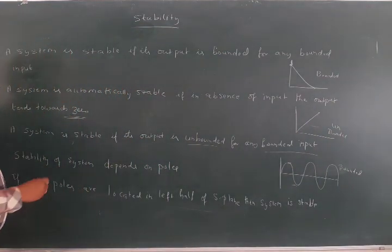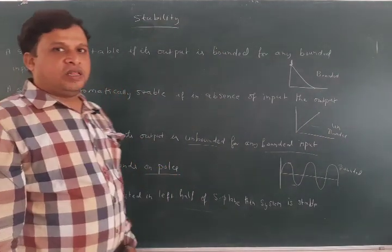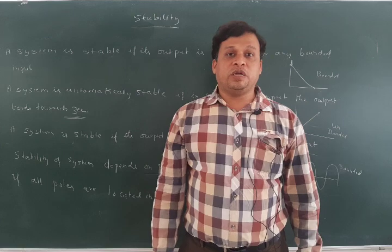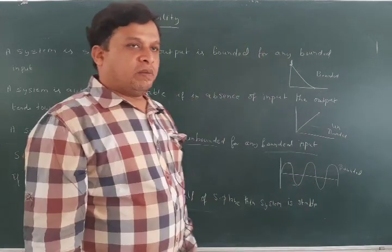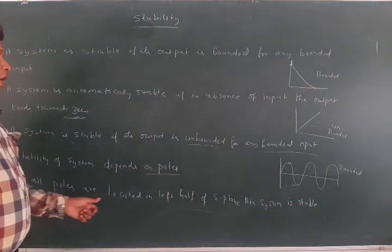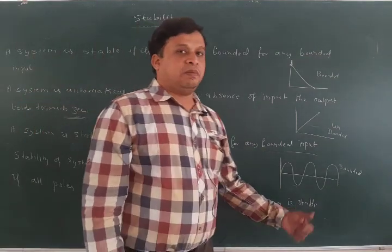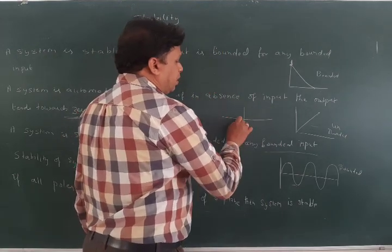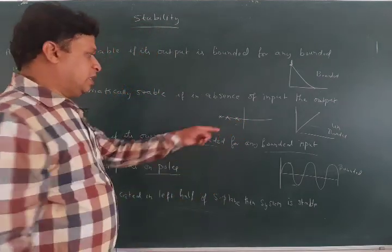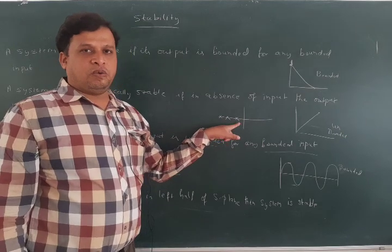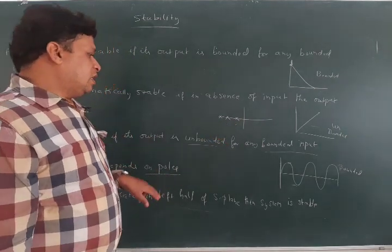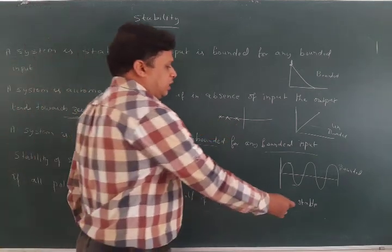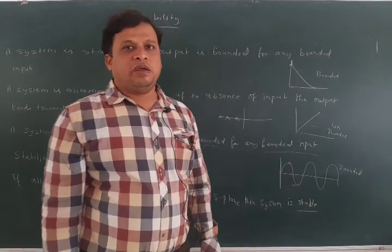Stability of a system also depends on the poles. We have already seen about poles and zeros in the previous class. All poles located in the left half of the s-plane means the system is stable. If you calculate the poles from a given transfer function and the poles fall in the left half of the s-plane, then the system is stable.